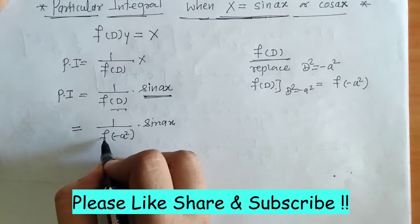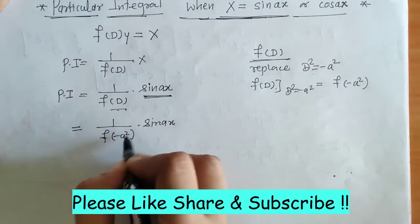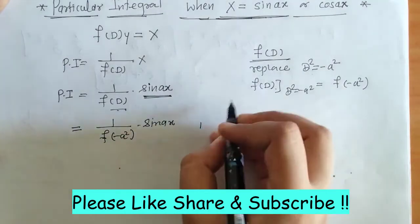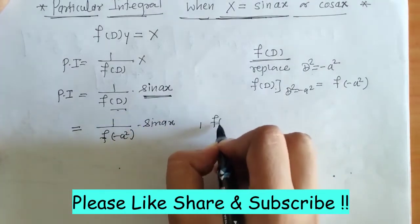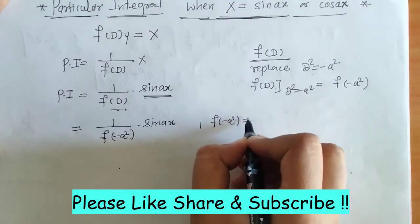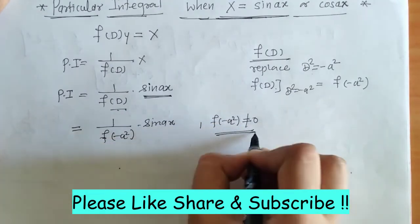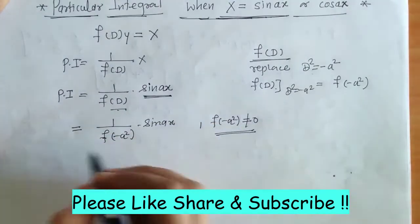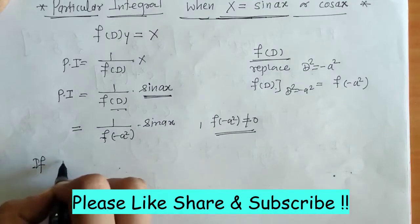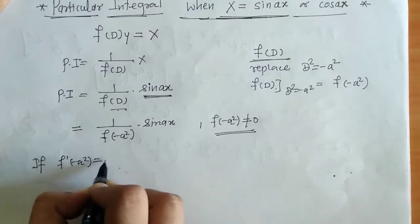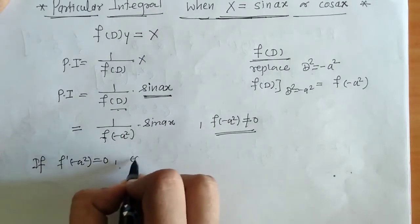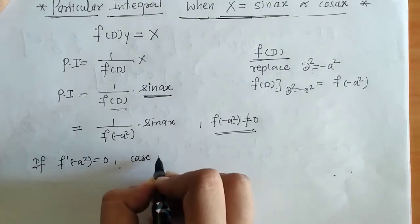The condition is that this denominator should not be zero — that means f(-a²) should not be zero. If this becomes zero, that case fails.